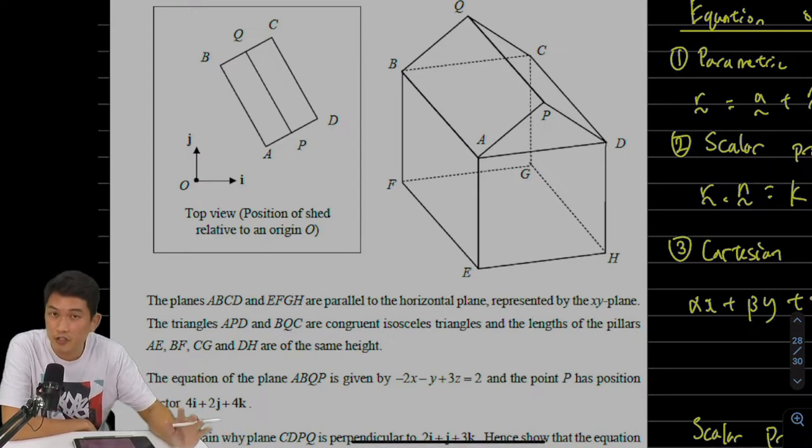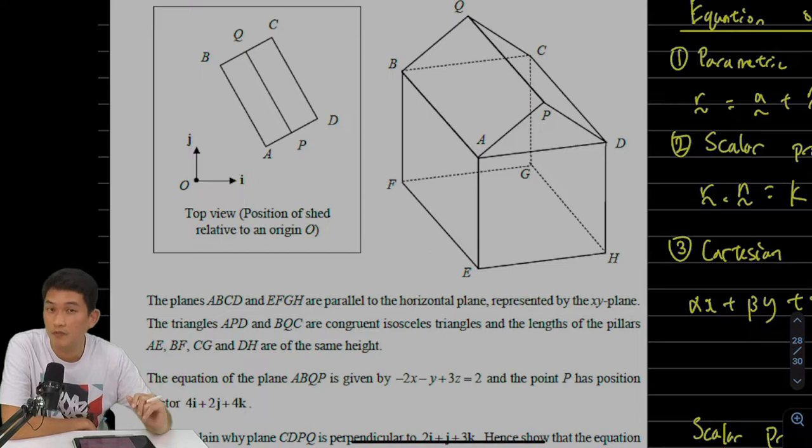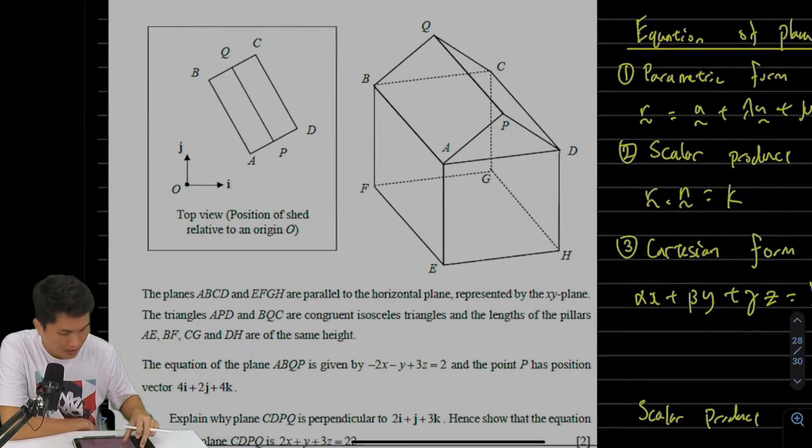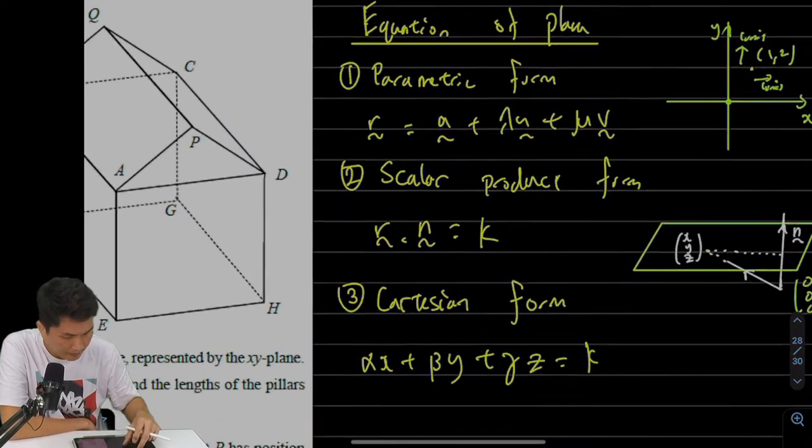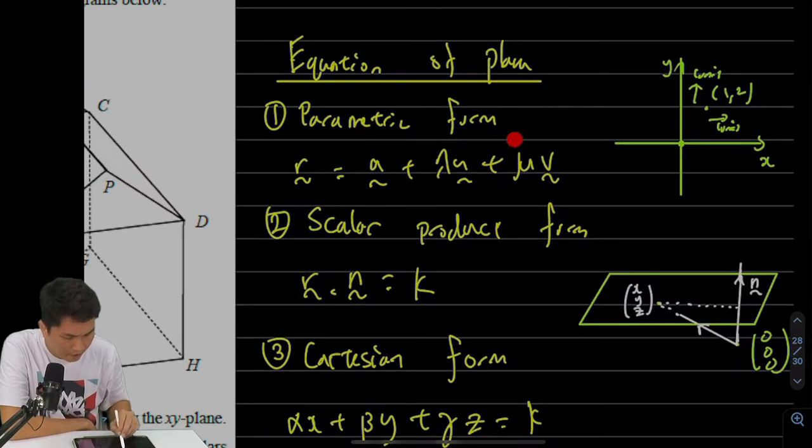Since this is a revision video, I thought it'd be good to go through the three different forms of equations of a plane. Let's look at the side over here. Number one, we have the parametric form.